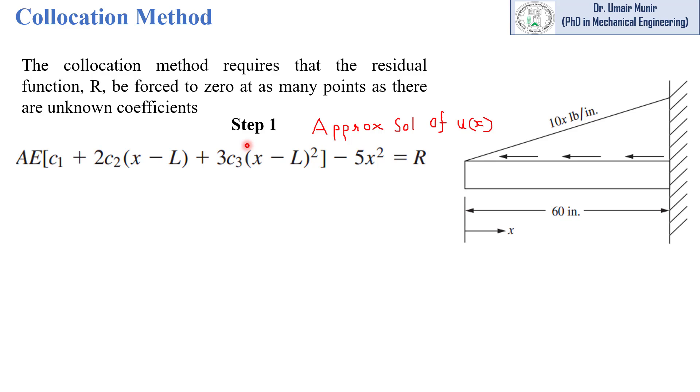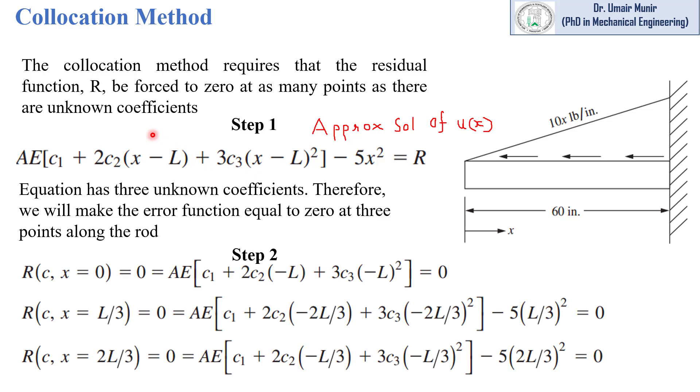Collocation method requires that the residual function, this function R, to be forced equal to 0 at as many points as there are unknown coefficients. We can see in this residual function that there are 3 unknown coefficients: c1, c2, and c3. So we will force this R equal to 0 at 3 different points of this rod along its length.